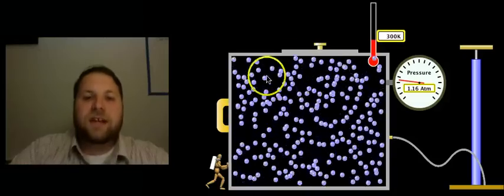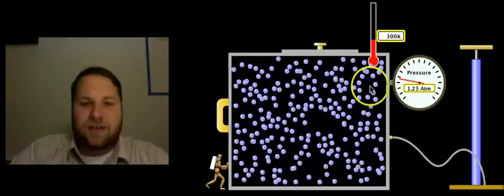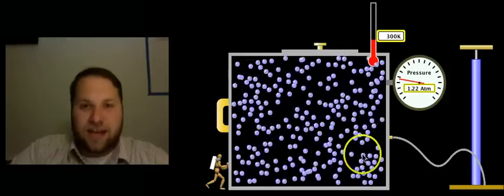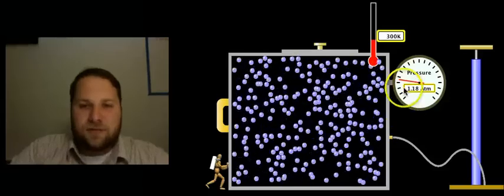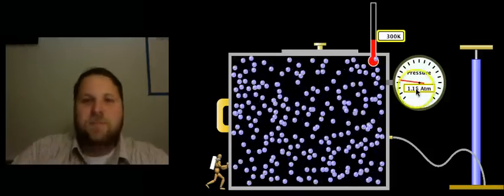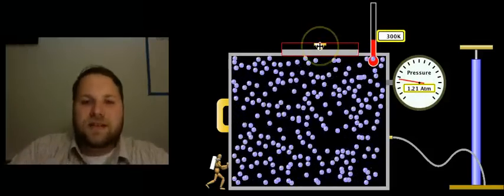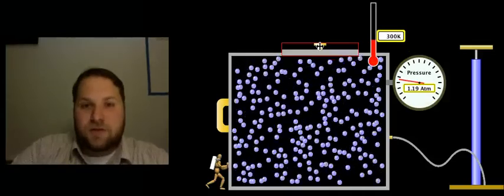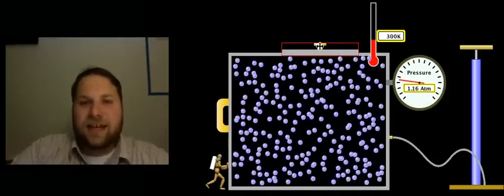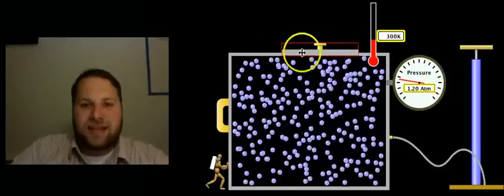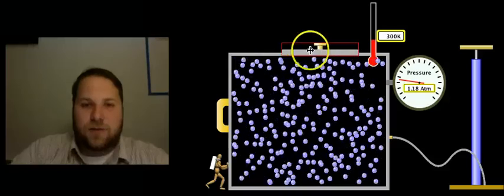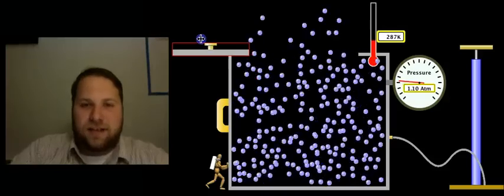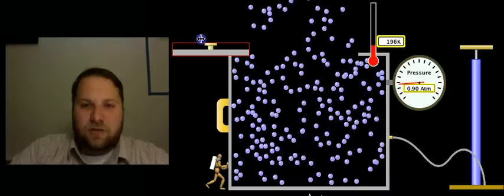The first thing we're going to look at is the impact of how much gas is in here, the number of gas particles on the pressure. With this many gas particles, we've got about 1.2 atmospheres of pressure. What we're going to do is take this very top part and slide that over and let some of the gas out. I want you to watch what happens to the pressure. We slide it, we let some of them out, and look at the pressure dropping.